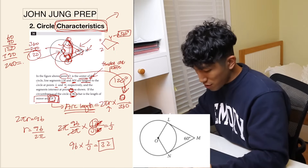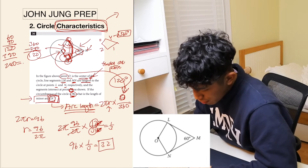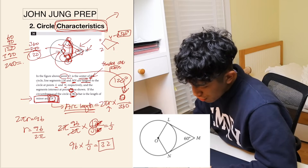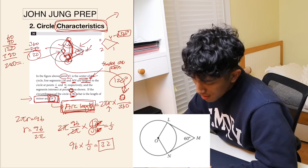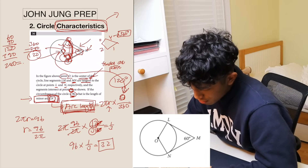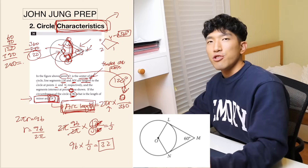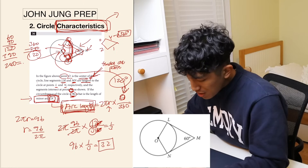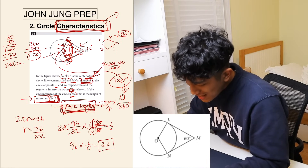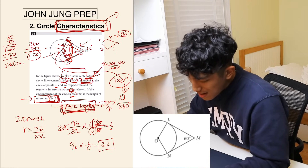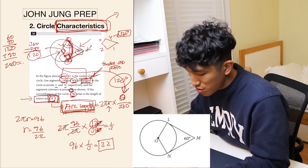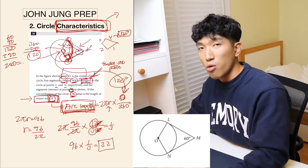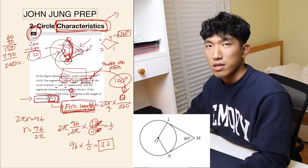So the arc length of LN is 32. Arc length came up again — whenever you see anything related to arc length, there's a very high chance you'll need that formula. Also, this question used circle characteristics: whenever tangent and radius appear together, you must recognize that those two lines form a right angle. Without knowing that, there's no way to solve the question.